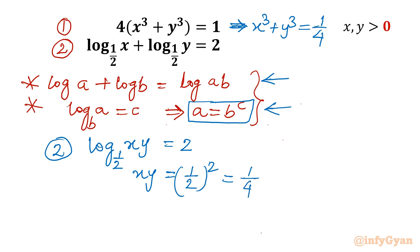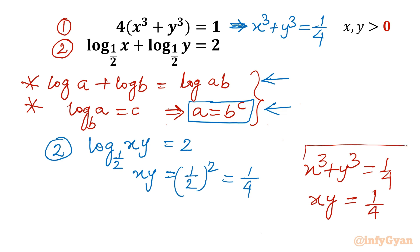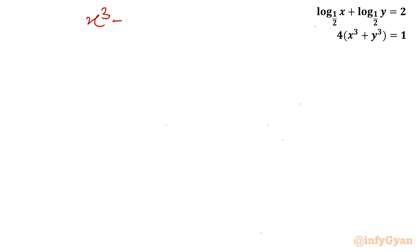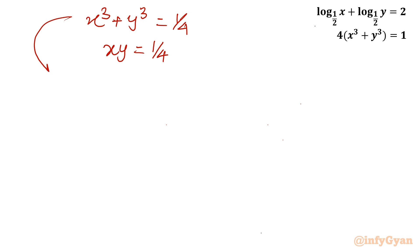So our simplified system is: x cube plus y cube equal to 1 by 4 as the first equation, and xy equal to 1 by 4 as the second equation — now without any logarithm. This is the system we have to solve ultimately.